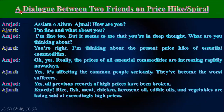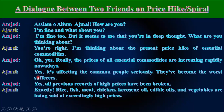Sample dialogue 2 — a dialogue between two friends on the Price Hike spiral. Characters: Amjad and Ajman. Amjad: Assalamu Alaikum, how are you? Ajman: I am fine. And what about you? Amjad: I am fine too. But it seems to me that you are in deep thought — what are you thinking about? Ajman: You are right. I am thinking about the present price hike of essential commodities. Amjad: Oh yes, the prices of all essential commodities — things of common use — are increasing rapidly nowadays. Ajman: Yes, it's affecting common people seriously. They have become the worst sufferers.